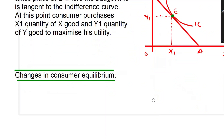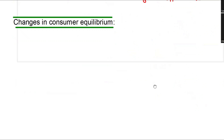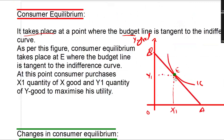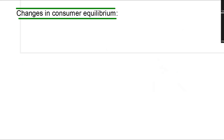Now we are looking into the changes in consumer equilibrium. Changes in consumer equilibrium take place due to three reasons: the first is income effect, the second is price effect, and the third is substitution effect. We will look into them one by one.